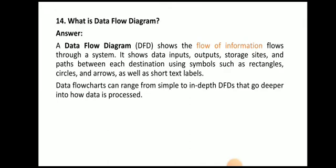What is a data flow diagram? A data flow diagram shows how information flows through a system. It shows data inputs, outputs, storage sites, and the paths between each destination using symbols such as rectangles, circles, arrows, and short text labels. Data flow diagrams can range from simple to in-depth charts that go deeper into how data is processed.